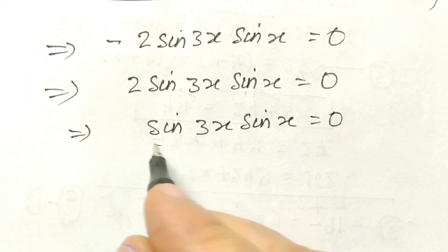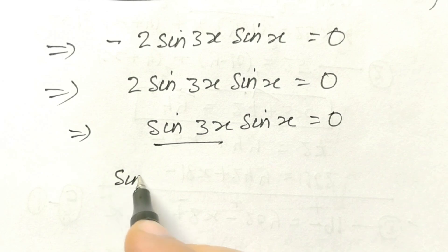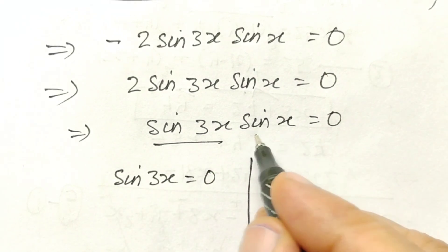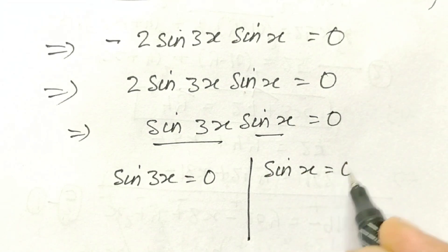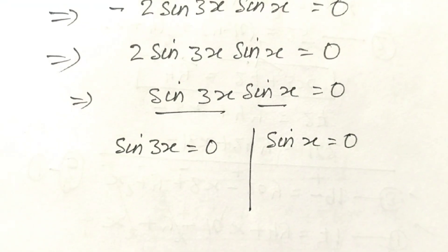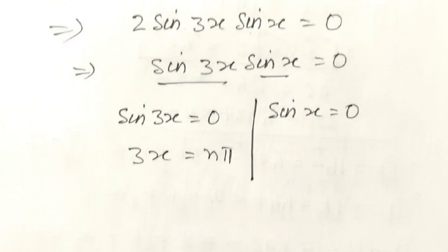Now, we have two cases. Sin 3x is equal to 0. So, 3x will be equal to n pi.